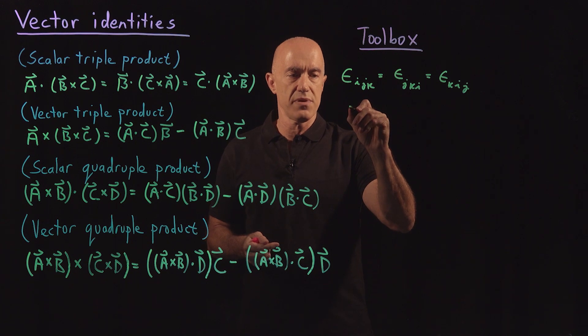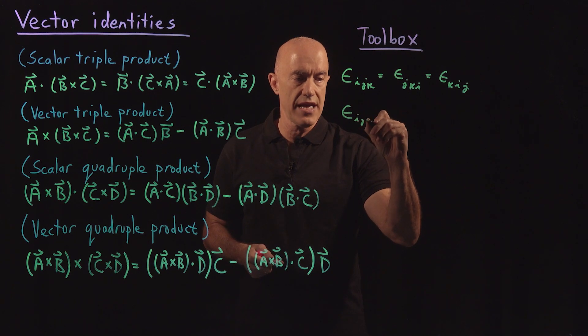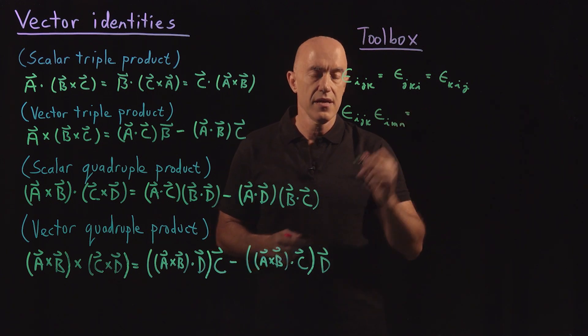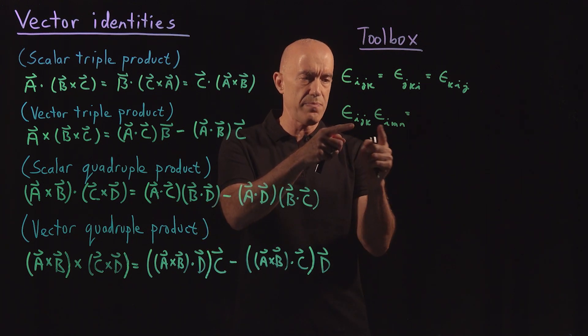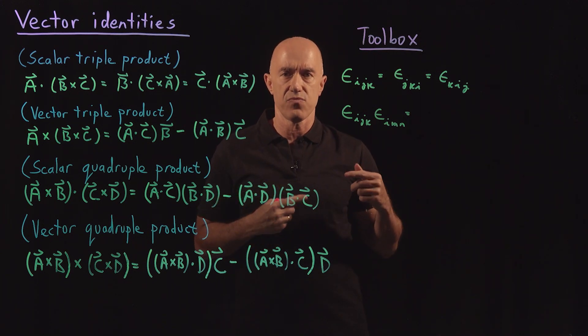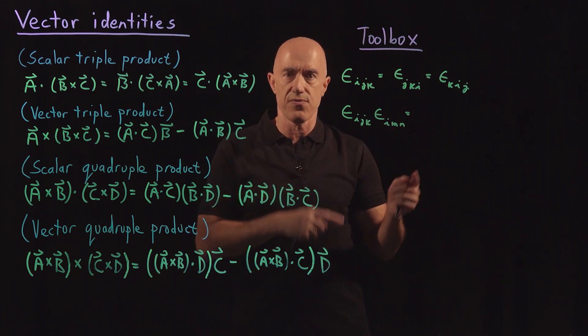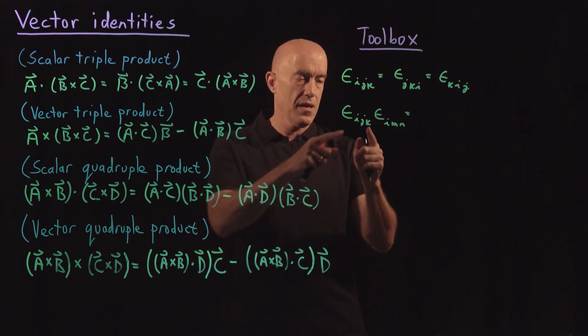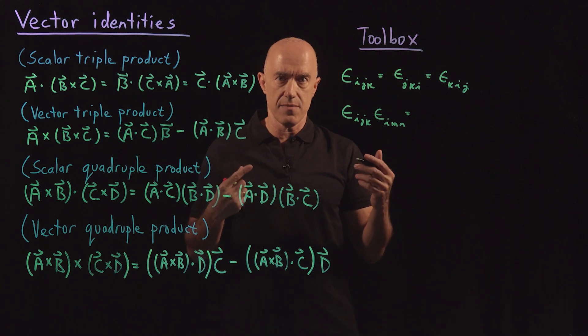The next element will be what happens if we contract one of these indices. So epsilon_ijk times epsilon_imn. So we're working under the Einstein summation convention. So that means where i is repeated. So that means we say that i is contracted if an index repeats. That means we're summing over i. So we're summing over i equals one, two, three. So there are three terms here. That's the summation.